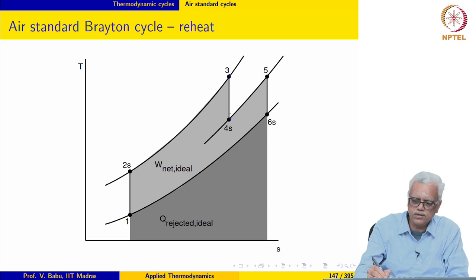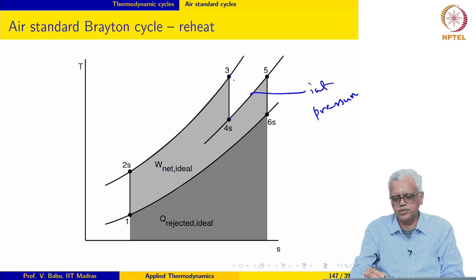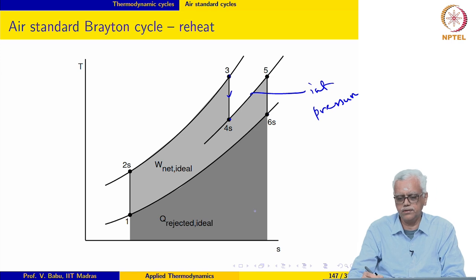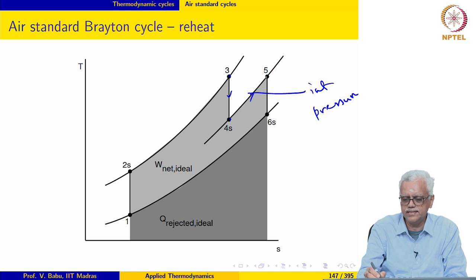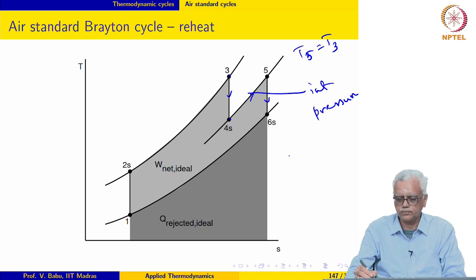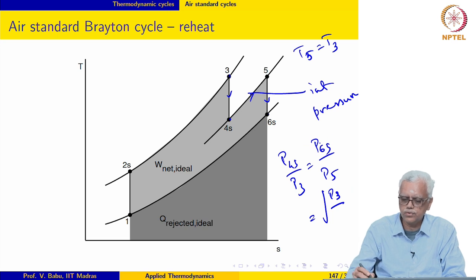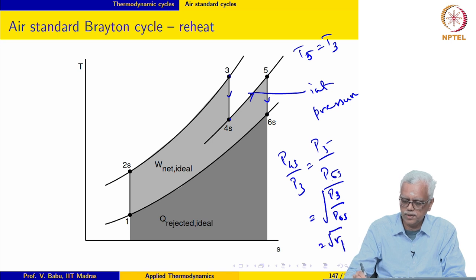Reheat is the same as multistage compression with intercooling but on the expansion side. We expand to an intermediate pressure, and the optimal intermediate pressure is such that the pressure ratio between stages 3-to-4S and 5-to-6S is the same — equal to the square root of the overall pressure ratio in the cycle. For optimal operation, T5 equals T3, and P5 over P6S equals P3 over P6S equals the square root of RP in the cycle.